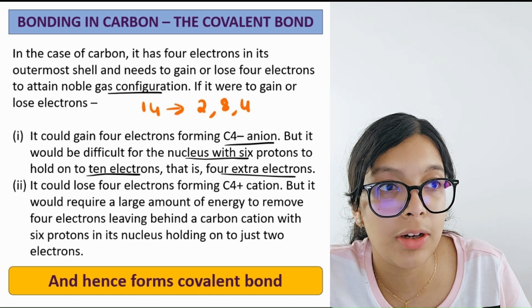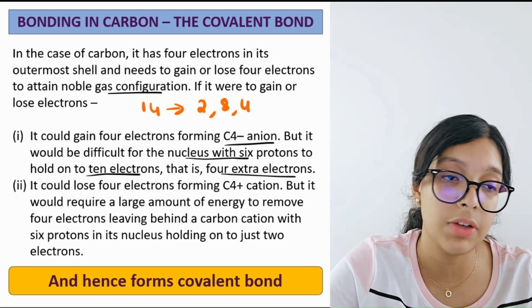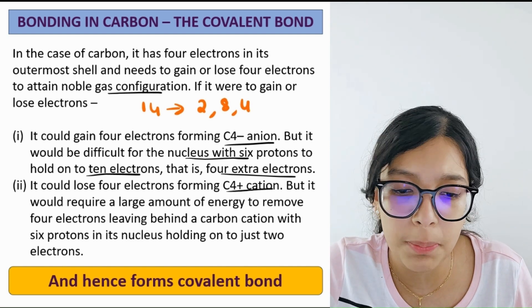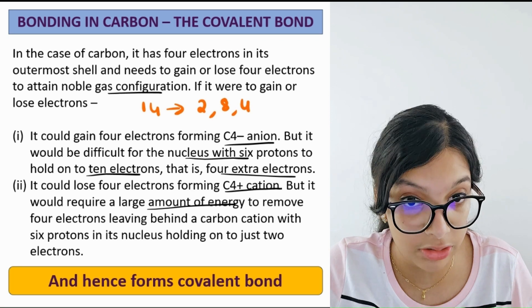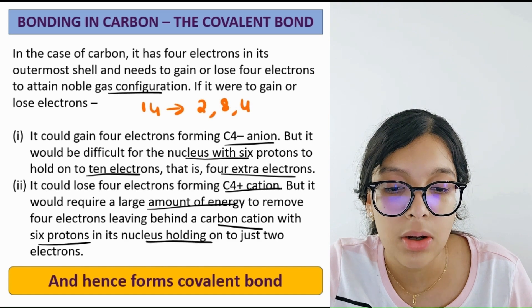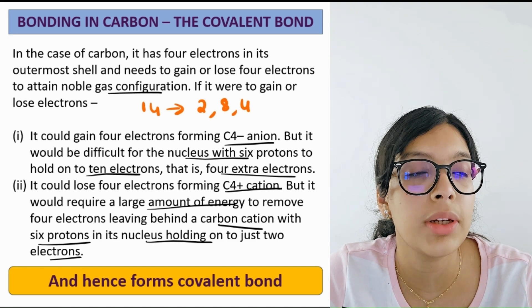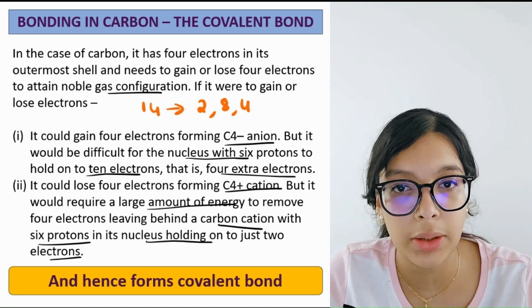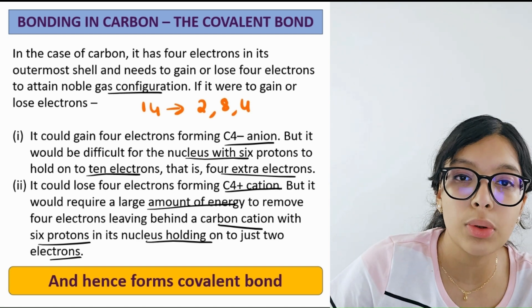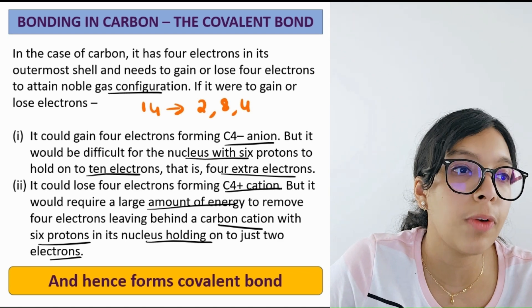Instead of gaining, we follow sharing of electrons. If carbon tries to lose electrons, forming a C4+ ion, it would require a large amount of energy to remove four electrons, leaving behind a carbon cation with six protons holding on to just two electrons. So these difficulties led to the study and formation of electron sharing — covalent bonding.